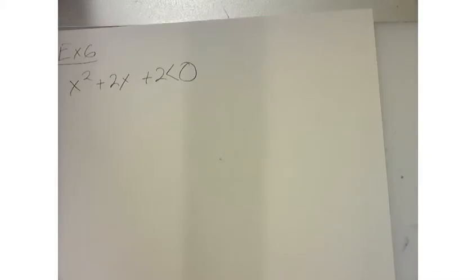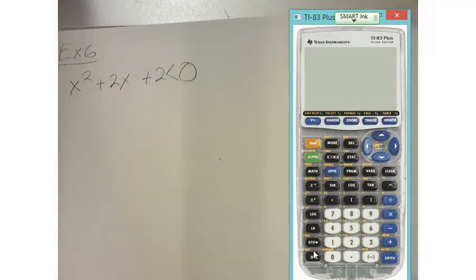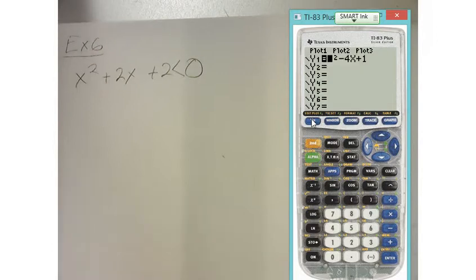So we're asked to solve this inequality. First let's graph it and see what it looks like. Everything that we've been doing with regards to these quadratics is we find the solution simply by either factoring, using the quadratic formula, or graphing. But what we're really looking for is where it crosses the x-axis because it's set equal to zero, right?